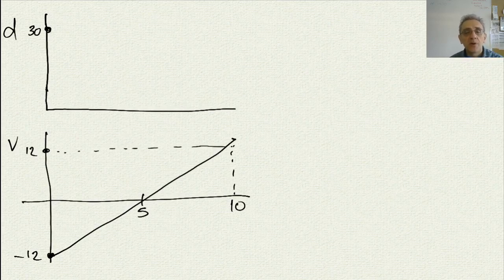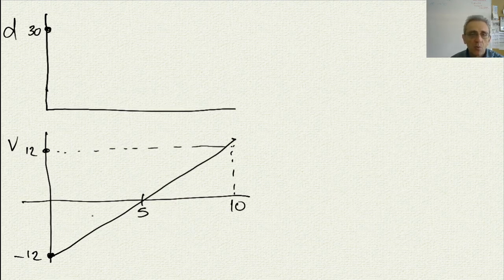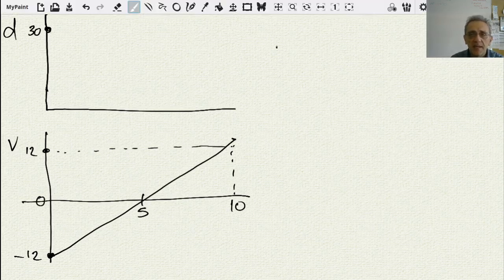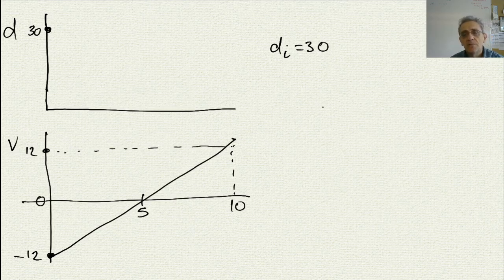Welcome back. Today we're going to continue working on motion graphs. I have provided you with the VT graph here — positive 12, negative 12. It goes from negative 12 to positive 12 over 10 seconds, hitting 0 at 5 seconds. I'm also going to give you the initial position as 30. Pause the video now and see if you can draw both the DT and the AT graph.